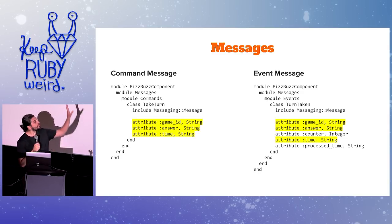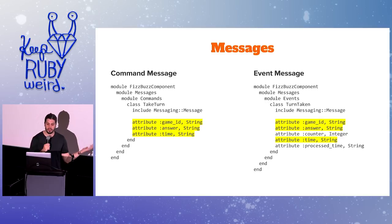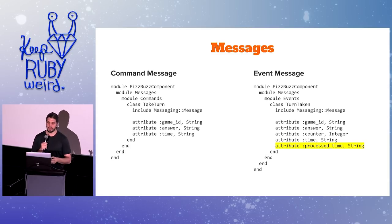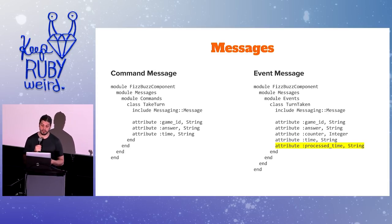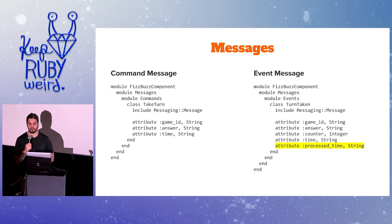Very commonly when we have command messages that publish event messages, we copy the common attributes. In this case, game ID, answer, and time are copied from the command message straight to the event message. We also have two timestamps on our event message, because you have two notions of time: when the client requested the turn to be taken, and when the service actually got around to processing that command. It's very important to keep those two straight.